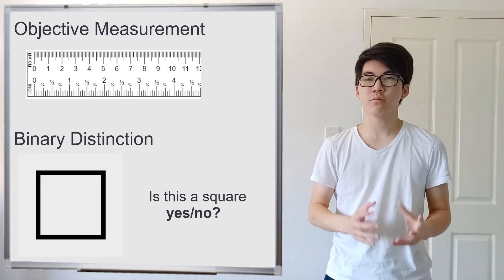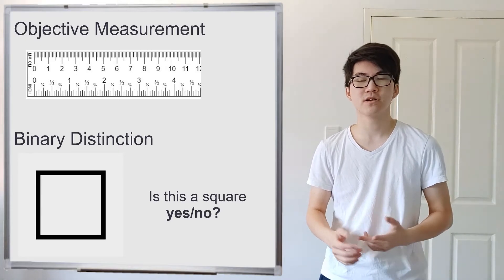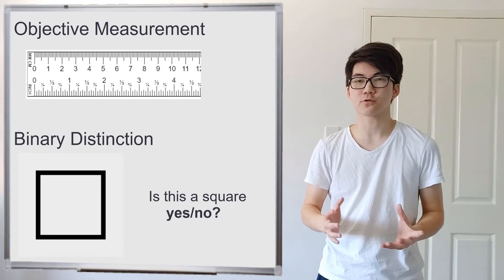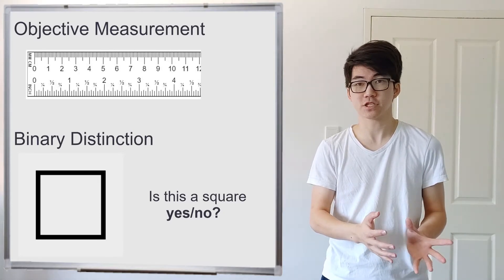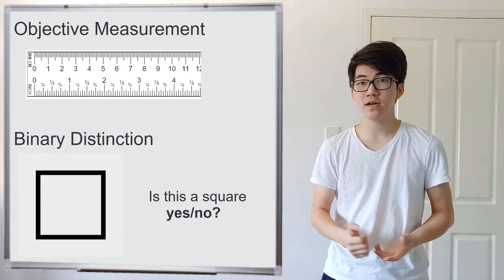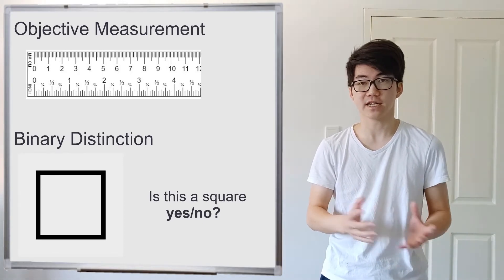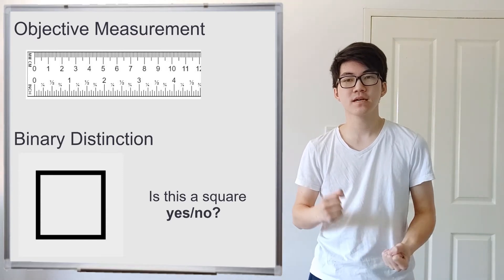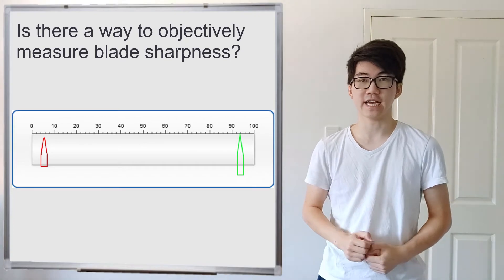Now you can try and put blade sharpness into a binary distinction. You could say it's either sharp or it's not sharp. But there's a huge variance between a sharp knife and a dull knife. Some people would say that a certain knife is sharp and other people would say it's dull. And even if everyone agrees it's sharp, some people might say that it is sharper than another knife which is also sharp. So is there a way to objectively measure blade sharpness? That's what we'll be going through today.